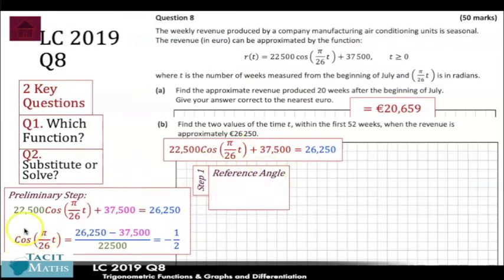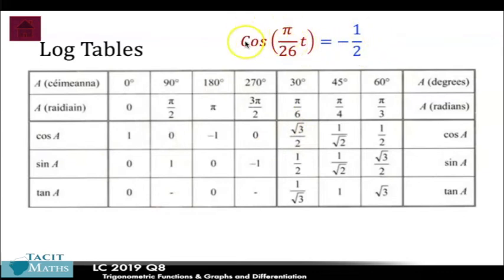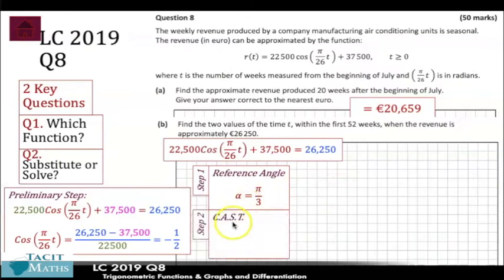Your first proper step is to find the reference angle. We have cos equals one half — we ignore the minus for now. Go to your log tables: we're working in radians, so we look up one half and find the reference angle is pi over 3.